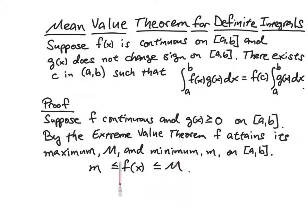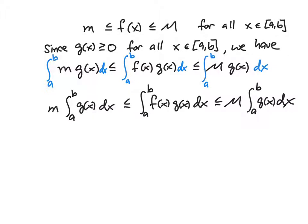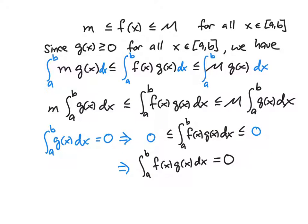We have f is bounded between a lower bound and an upper bound for all x on [a,b], so m ≤ f(x) ≤ M for all x ∈ [a,b]. Since g(x) is greater than or equal to zero for all x in [a,b], we can multiply this inequality by g(x) and we do not change the direction of the inequality. Now we integrate each side of the inequality and then we factor out the constants little m and capital M. Now we have something that looks closer to what we're trying to prove.